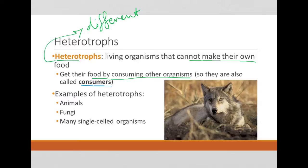That would be like us as humans eating another animal that then eats a plant. We'll talk more about that in food chains and food webs again in ecology. Examples of heterotrophs include animals, fungi, and many single-celled organisms.